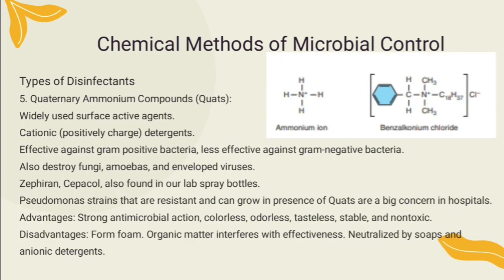Quaternary ammonium compounds, or quats, are widely used surface-active agents. They are cationic (positively charged) detergents effective against gram-positive bacteria, but less effective against gram-negative bacteria. They destroy fungi, amoebas, and enveloped viruses. Examples include Zephyran and Zephakol, also found in lab spray bottles. Advantages: they have strong antimicrobial action, and are colorless, odorless, tasteless, stable, and non-toxic. Disadvantages: they form foam, organic matter interferes with their effectiveness, and they can be neutralized by soaps and anionic detergents.